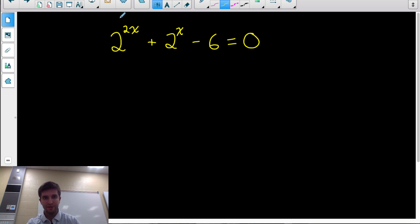So if we look at this exponential equation, or I should mention, if you didn't watch the previous video on solving exponential equations and on log rules, make sure you go back and watch those videos before watching this one. But what we have here, I have an exponential equation, right? The variable is in the exponent. I have 2 to the 2x plus 2 to the x minus 6 equals 0.